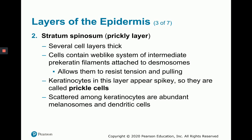Moving upward to the stratum spinosum, also called the prickly layer: though it is several layers thick, the cells contain intermediate prekeratin fibers that attach to desmosomes. This attachment from inside to outside the cell gives them a spiky appearance, hence the name prickly layer. We also find abundant melanosomes and dendritic cells scattered among the keratinocytes in this layer.